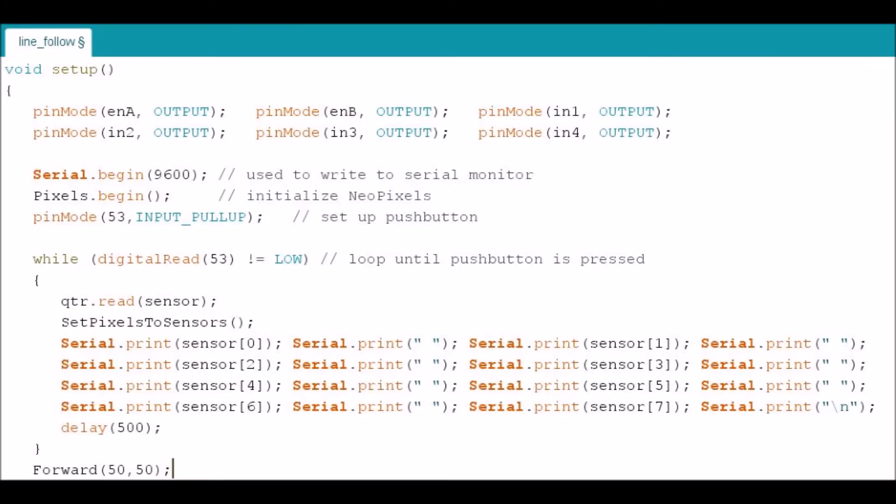And in the setup, connect to the pins, the motor controller, those two lines. And then we are going to begin the serial so that we can write to the serial monitor. Then we need to initialize the NeoPixels, pixels.begin. And then I'm connecting the push button on the MegaBoard to pin 53. So that's a number that you could change if you're using an UNO. Then I set up a while loop that is going to loop as long as the push button hasn't been pressed. And what this loop does is it reads the sensor and then it sets the pixels to the sensor. And then it prints to the serial monitor the value of each of those sensors. Then I set the delay at half a second so it just doesn't flood the screen too fast. Finally, after you press the push button, the while loop will exit and then it begins the forward 50-50, it begins moving.